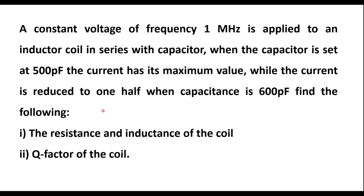In this video, let me consider one numeric series RLC circuit. A constant voltage of frequency 1 MHz is applied to an inductor coil in series with a capacitor. When the capacitor is set at 500 pF, the current has its maximum value, while the current is reduced to one half when capacitance is 600 pF. Find the resistance and inductance of the coil, and the Q factor of the coil.